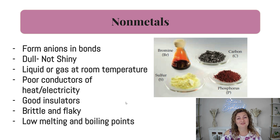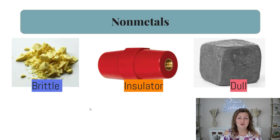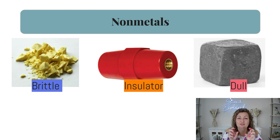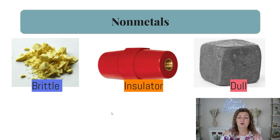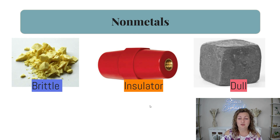Here are just a couple of examples. Brittle means they're going to break easily — they're going to kind of crumble in your hand and be flaky. Insulators — we use insulators for a lot of things, but it's usually to protect us from either heat or electricity, stopping it from burning us or electrocuting us. And dull is just going to be the opposite of shiny, so it kind of looks flat.